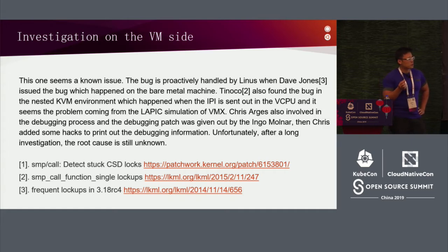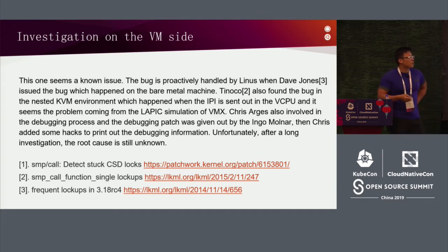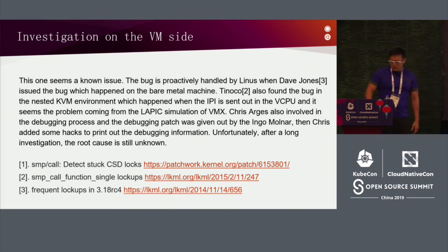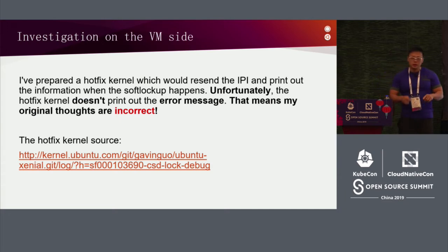Linux developers had been working on IPI loss issues for four to five years, including people from NUMA teams who provided configuration suggestions. We searched for a long time but couldn't find a conclusion. We couldn't determine why the IPI was missing — why it needed to wait for so long and then disappear.